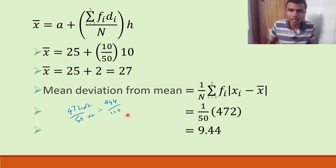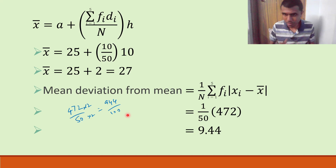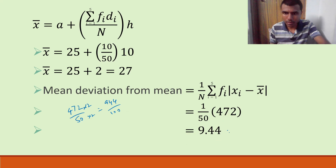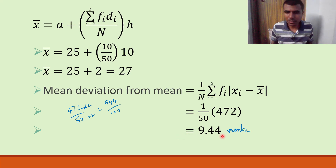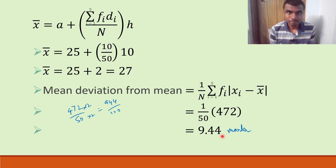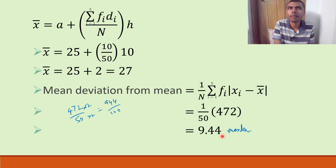Please use this technique and don't just mug up the answer. Also, the unit here is marks — I forgot to mention that. So the mean deviation from the mean is 9.44 marks.